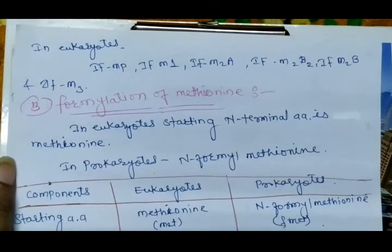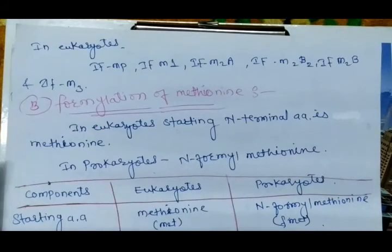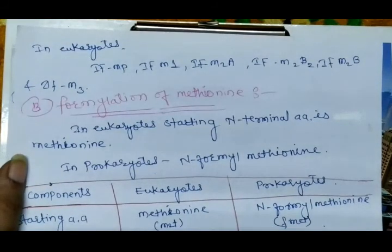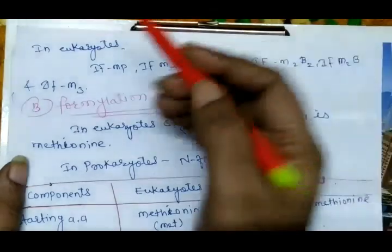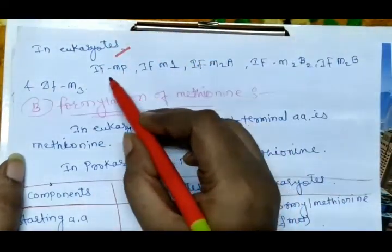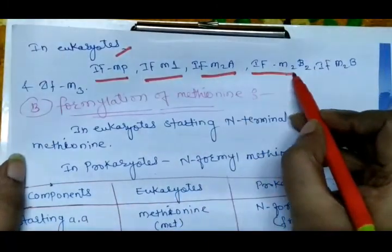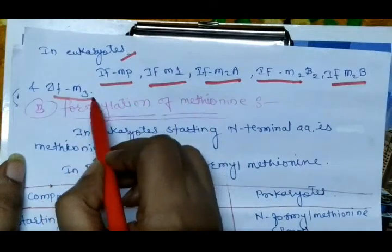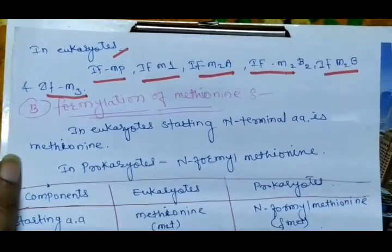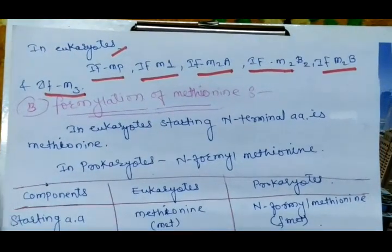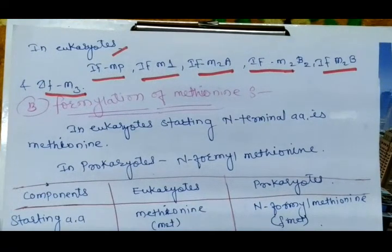In prokaryotes, the initiation factors consist of three types: IF1, IF2, and IF3. In eukaryotes, different types of initiation factors are present: IFMP, IFM1, IFM2A, IFM2B2, IFM2B, and IFM3, each having different functions.